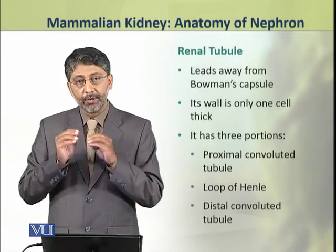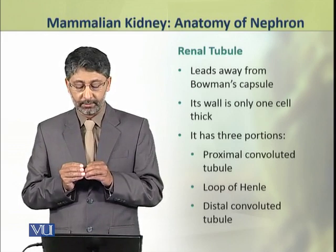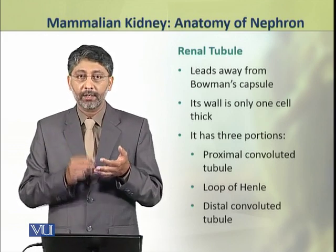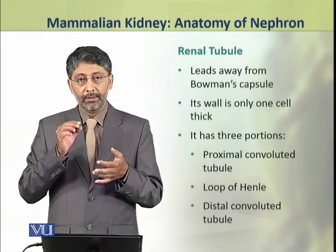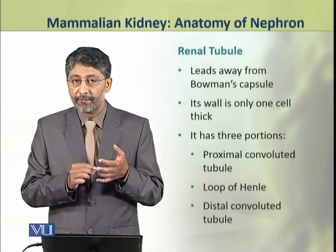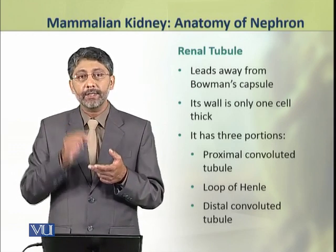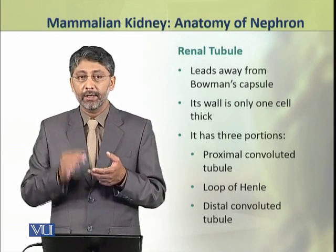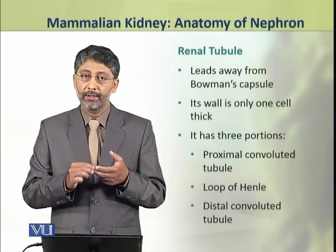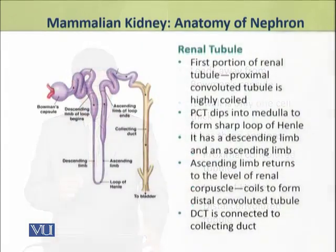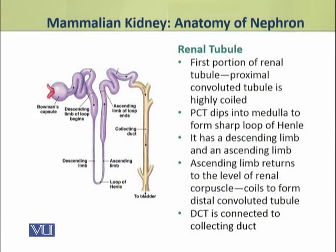The renal tubule has three portions: the proximal convoluted tubule, the loop of Henle, and the distal convoluted tubule. The first portion of the renal tubule, that is the proximal convoluted tubule, is highly coiled.